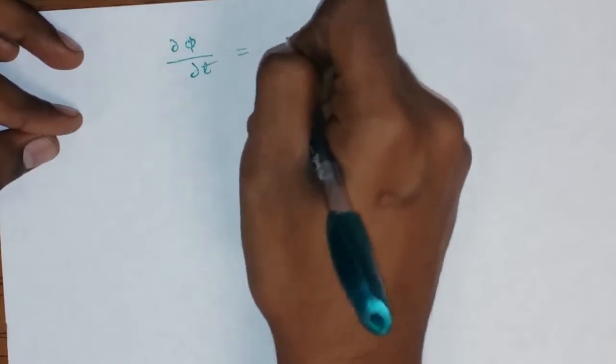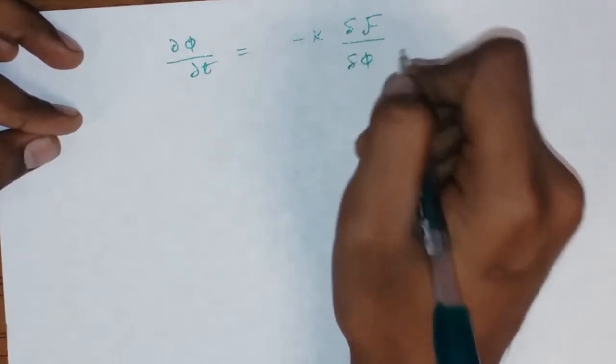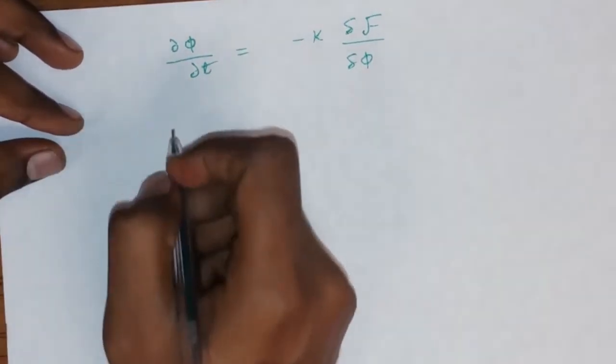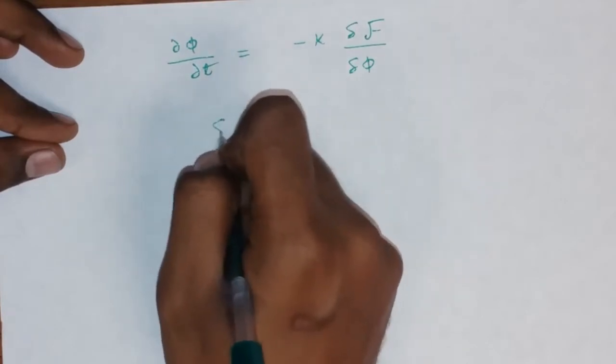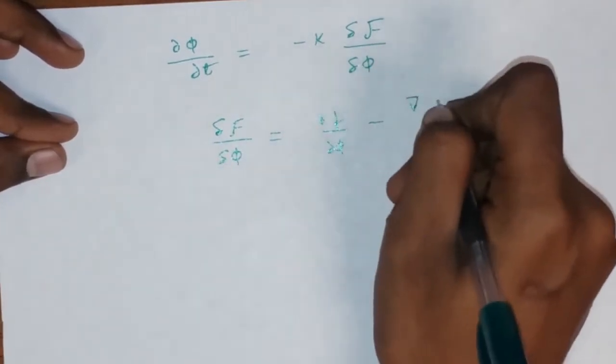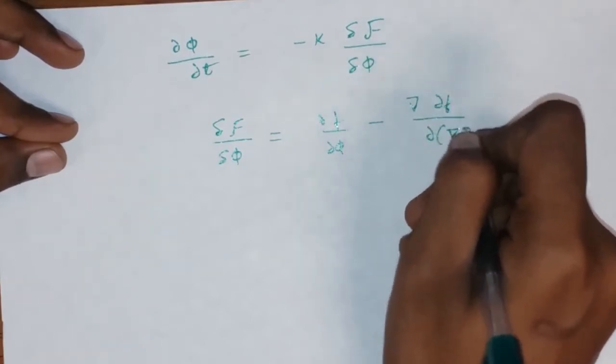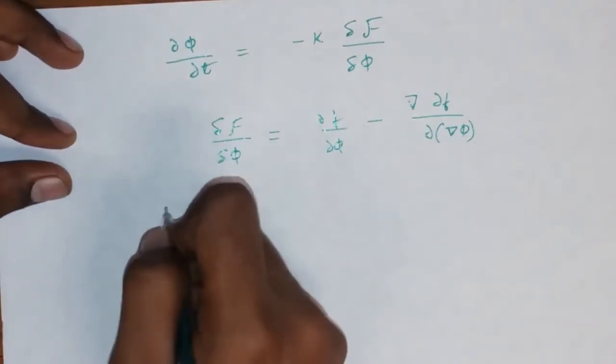Now, let's move on to the kinetics of the system. The kinetics is, again, very similar to the Kahn-Hilliot equation in that the free energy functional, a partial derivative of the free energy functional with respect to phi, is proportional to the change in the order parameter phi with respect to T. Now, the free energy functional, the variational derivative of the free energy functional, is given by, so that is the equation.